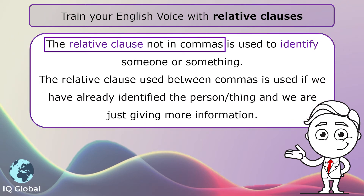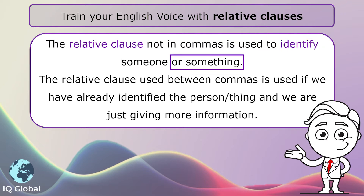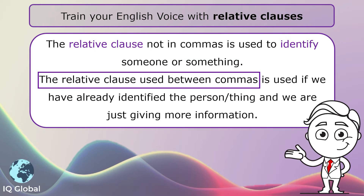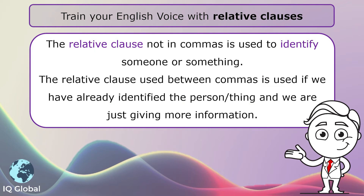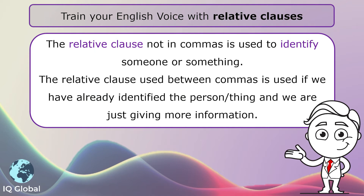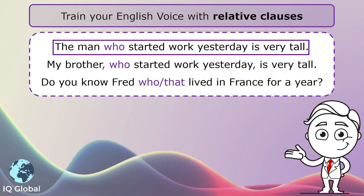The relative clause not in commas is used to identify someone or something. The relative clause used between commas is used if we have already identified the person or thing and we are just giving more information. Let's look at some example sentences.